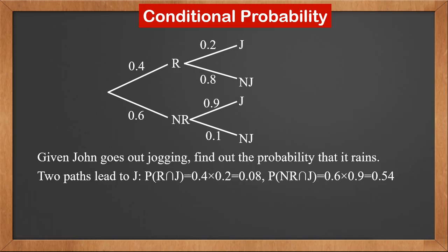The second path gives the probability of NR and J. This is 0.6 times 0.9, which is 0.54. So P(J) is the sum of these two, which is 0.62.